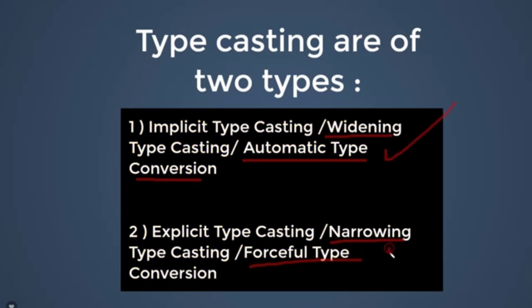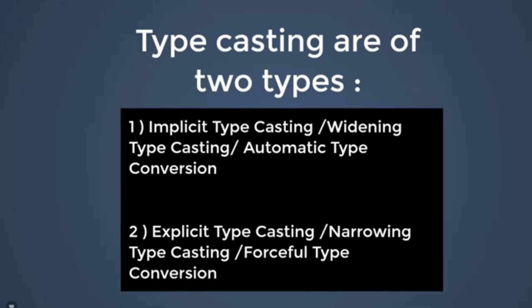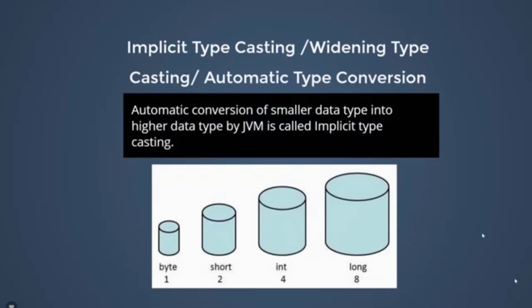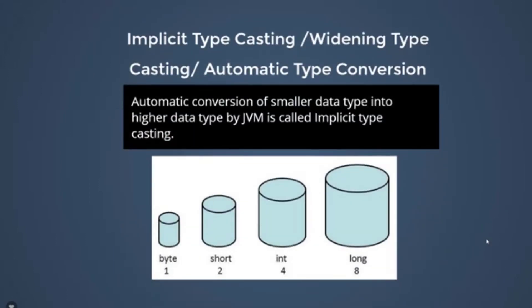First we will learn about implicit typecasting. In implicit typecasting, mostly a smaller data type is converted automatically into a higher data type. Automatic conversion of a smaller data type into a higher data type by JVM is called implicit typecasting.